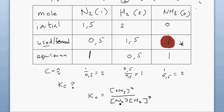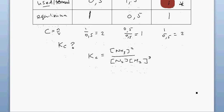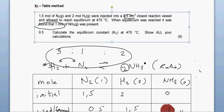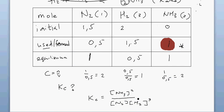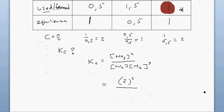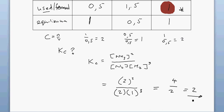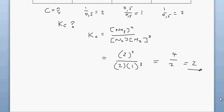Substituting the concentrations: Kc = (2)² ÷ (2 × 1³) = 4 ÷ 2 = 2. So the Kc value is 2. As mentioned previously, a Kc value of 2 tells us that there are more products than reactants at equilibrium. This is the solution to the question, which was worth 8 marks in the 2008 November DOE paper.